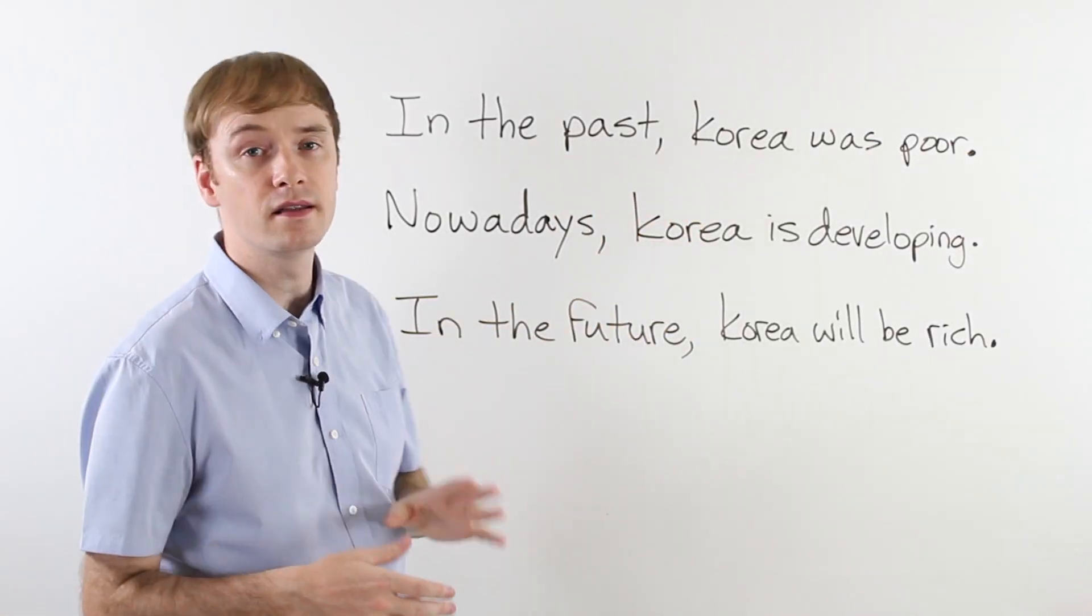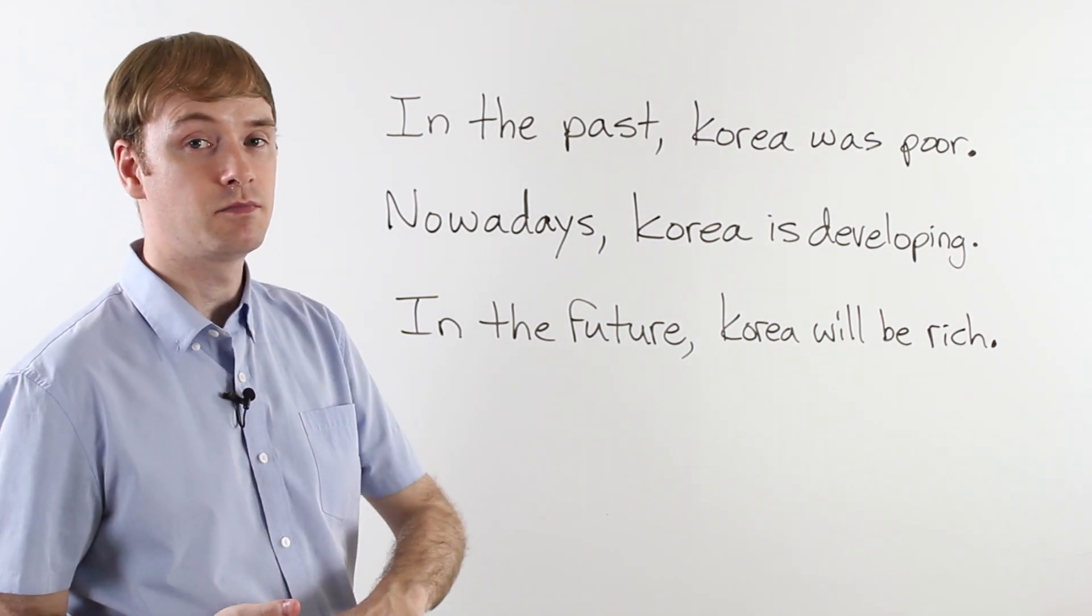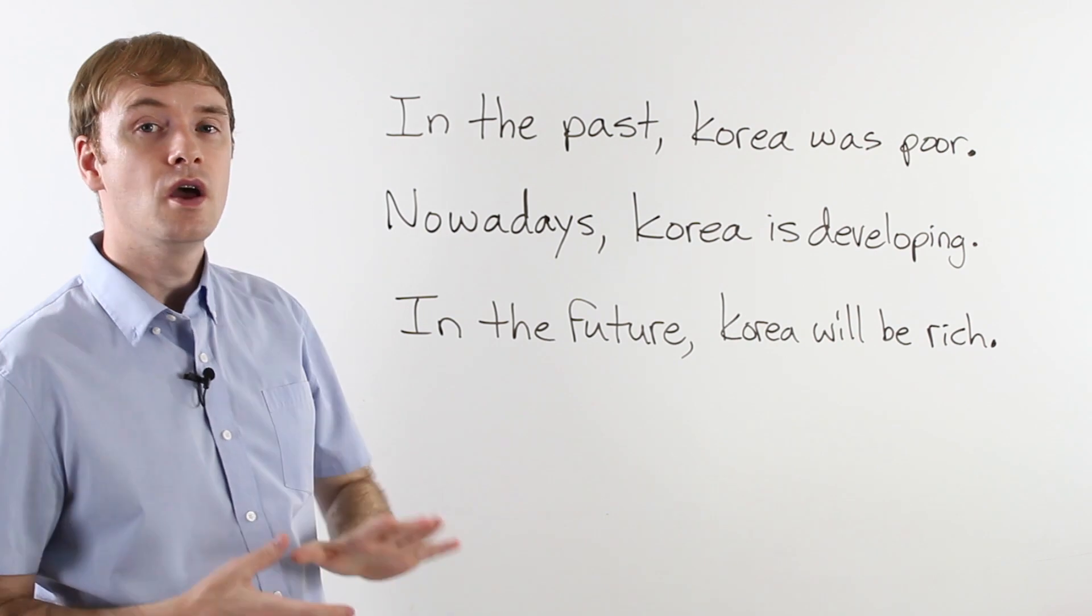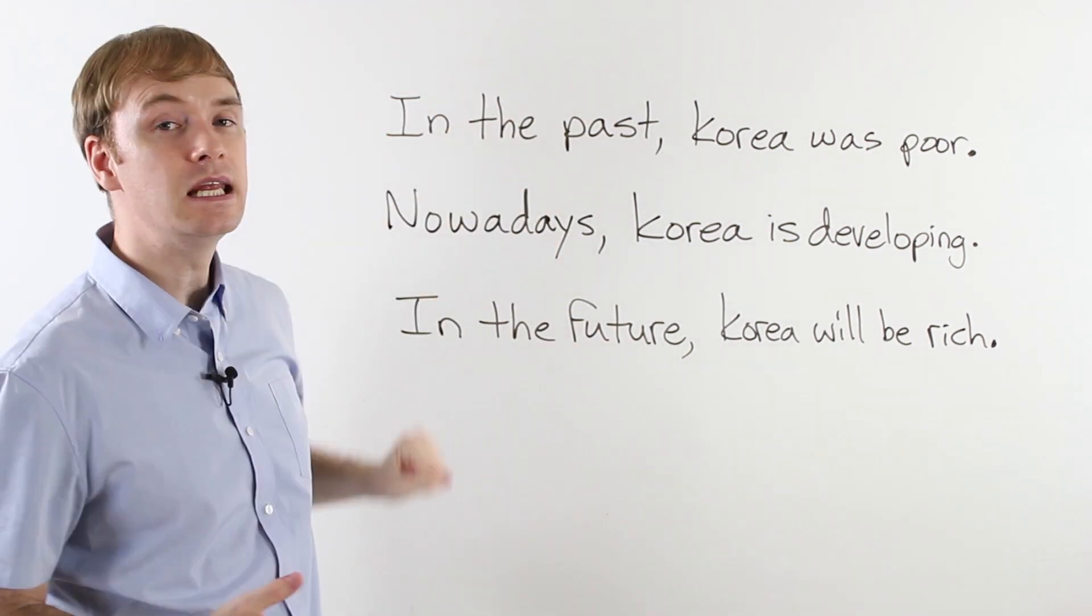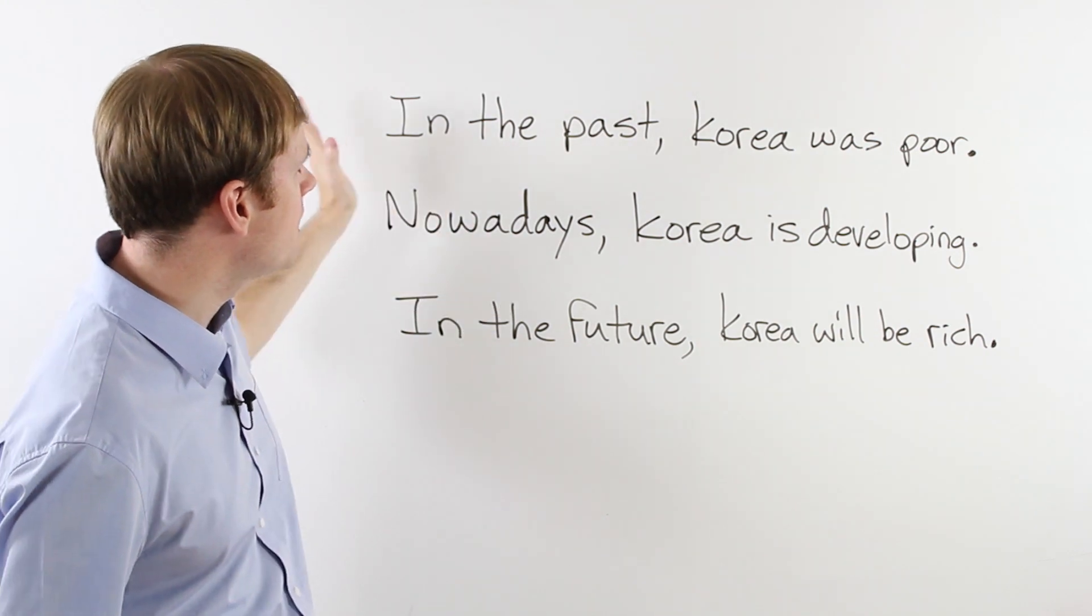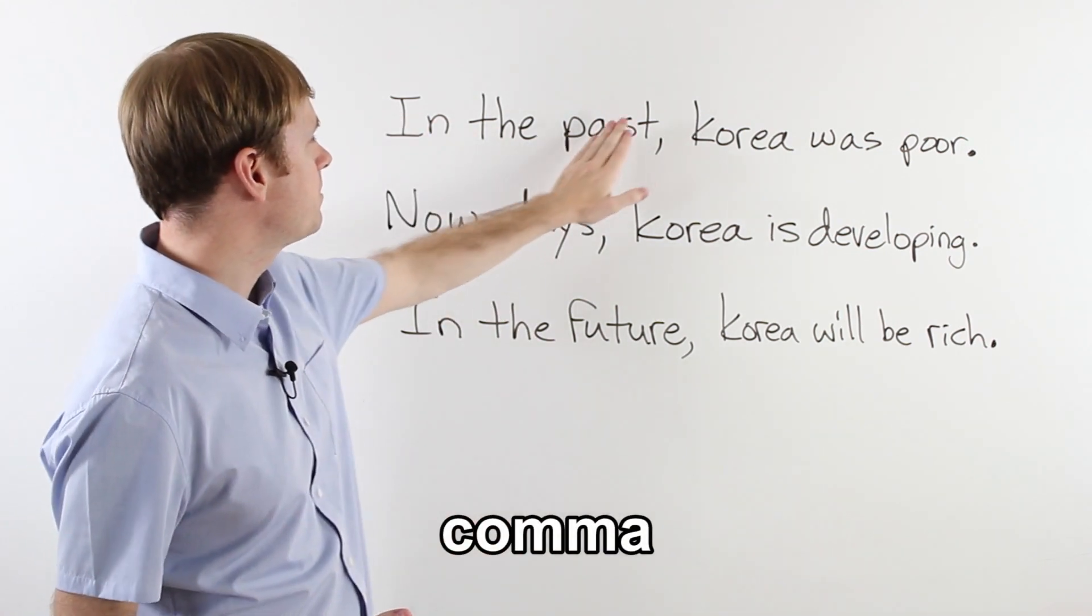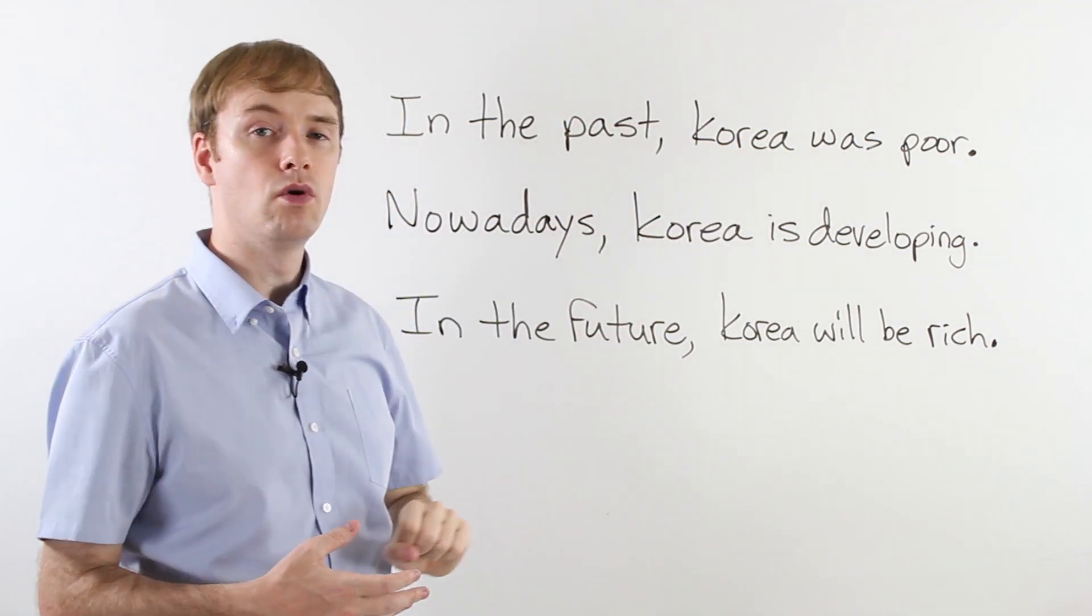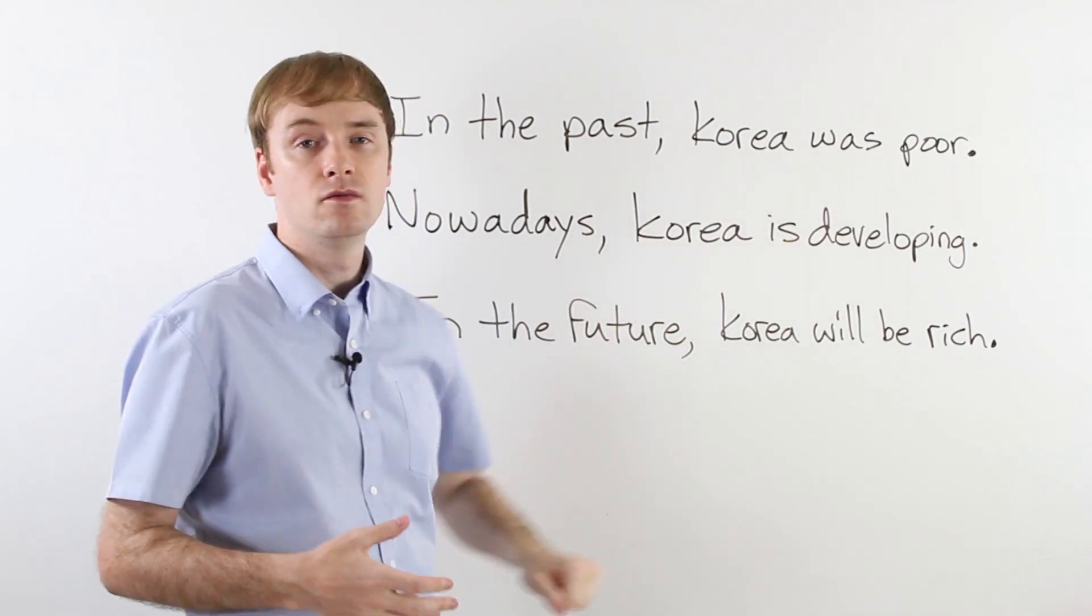I wrote three sentences here to help you understand how to use the time expressions past, present, and future. Let's take a look at the first one. In the past. We should try and always use our time expression at the beginning of the sentence. So in the past, that's my time expression. After our time expression, we should use a comma. In the past, comma. So in the past, Korea was poor. The economy was not good.